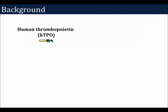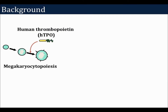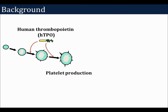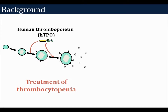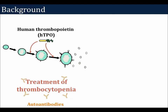Human thrombopoietin, HTPO, primarily stimulates megakaryocyte poiesis and platelet production. HTPO is being investigated for its potential to treat thrombocytopenia. Several recombinant forms of HTPO have been utilized in human clinical trials. However, those trials were cancelled because of the generation of autoantibodies in some patients and healthy subjects.